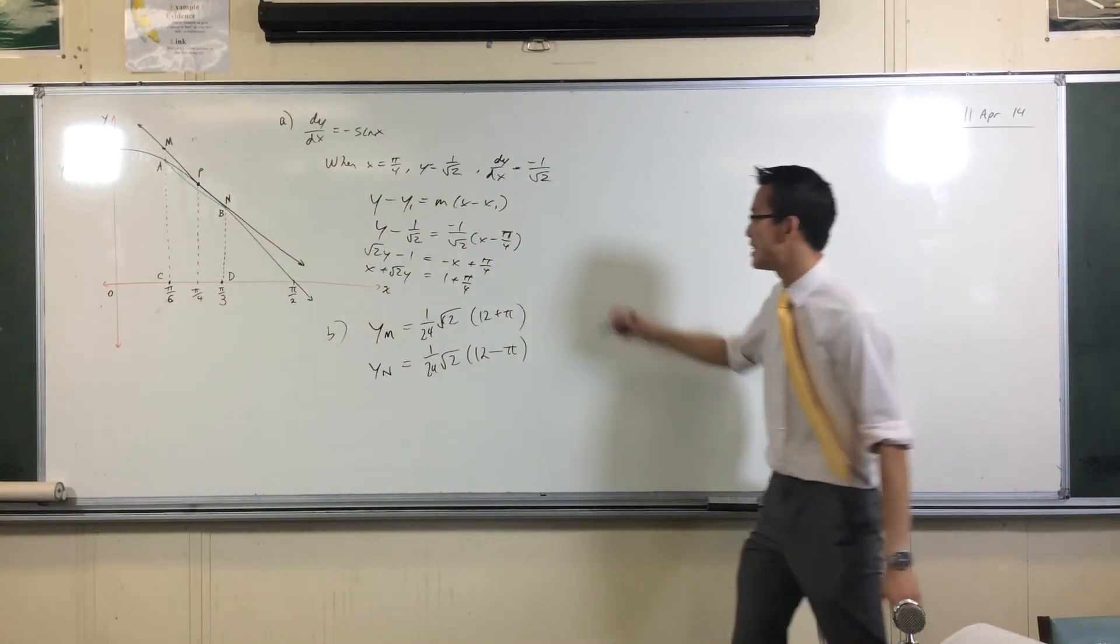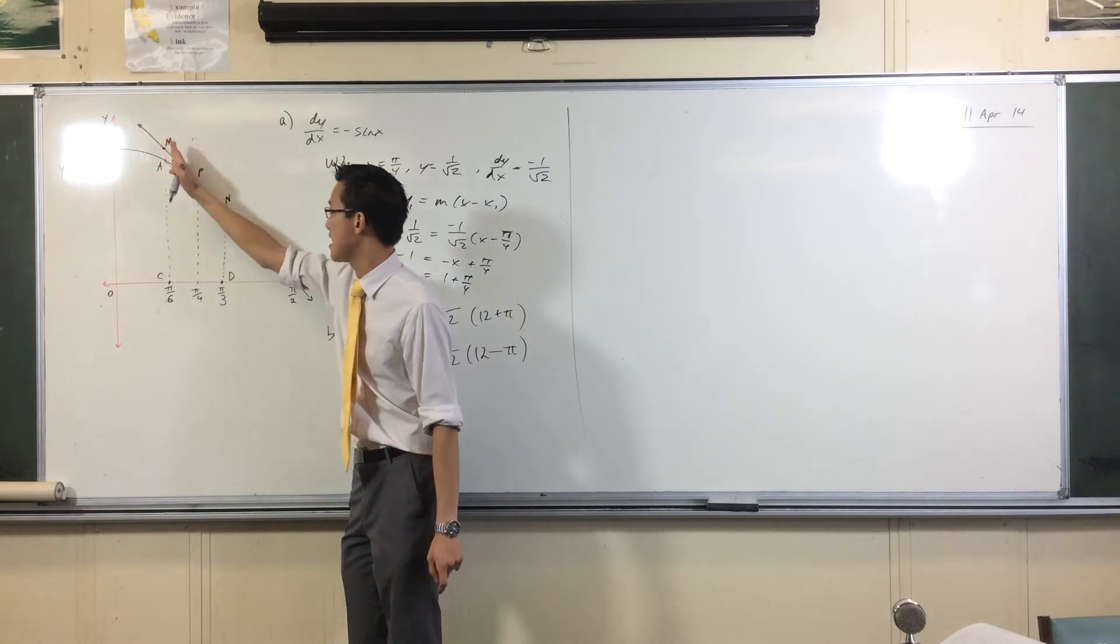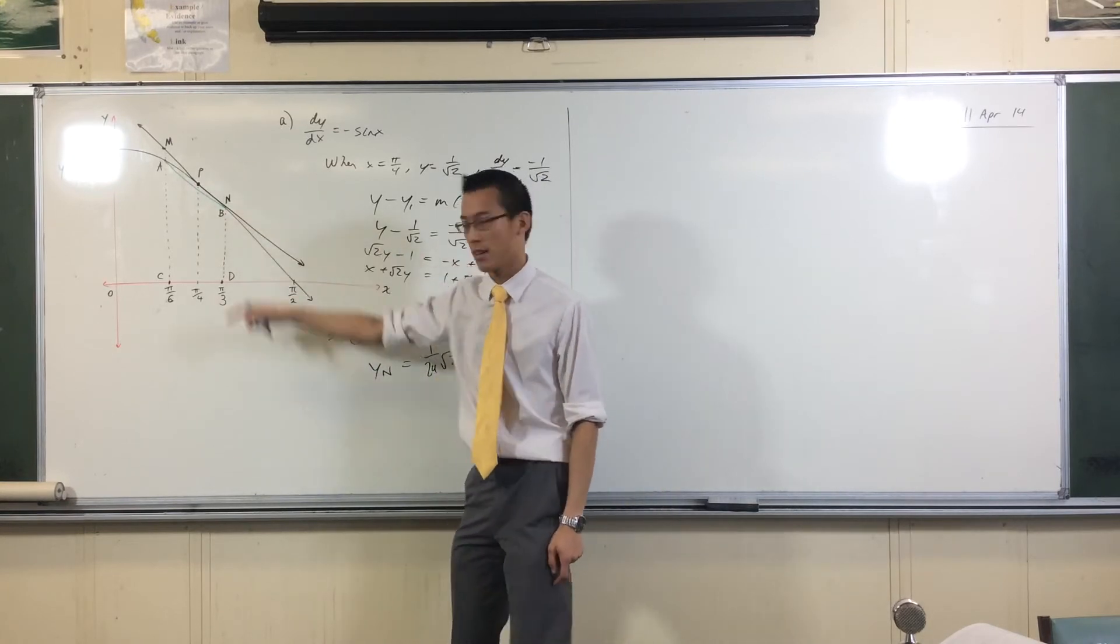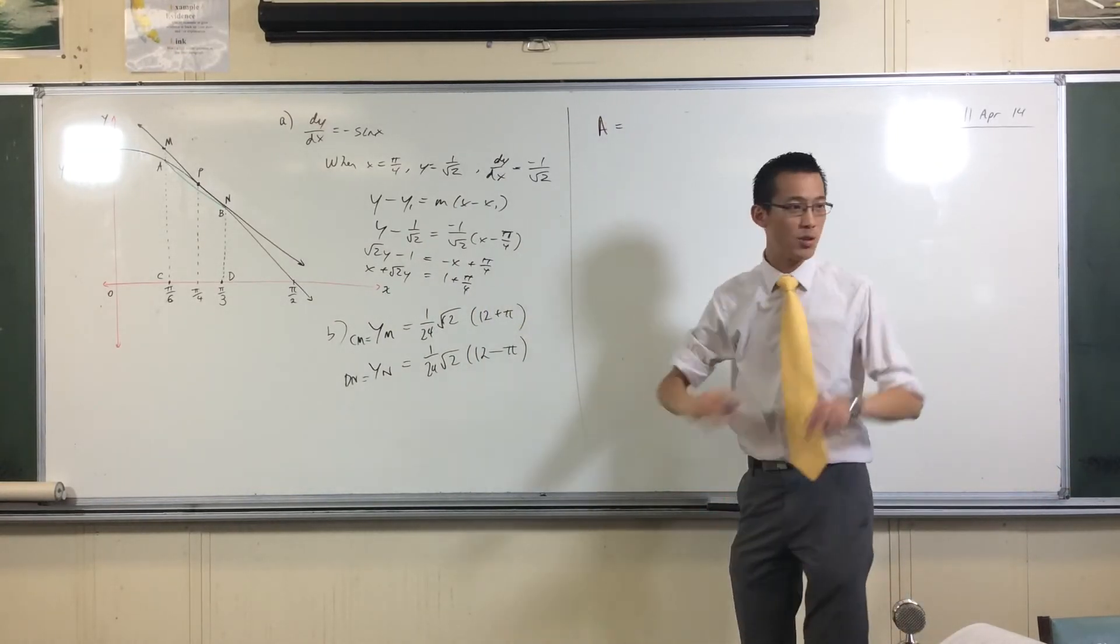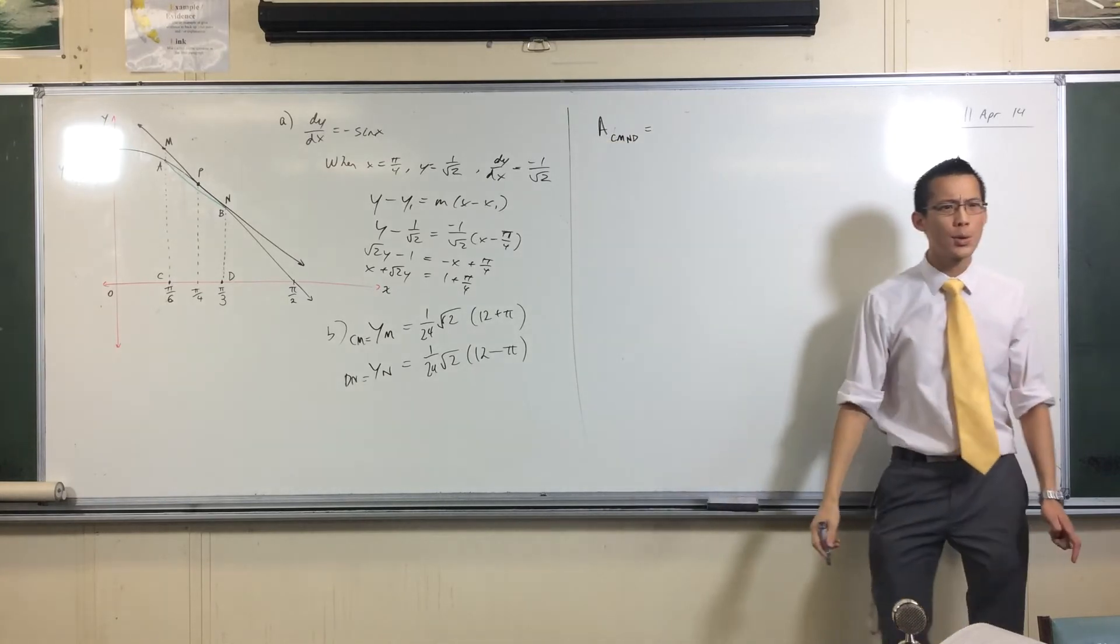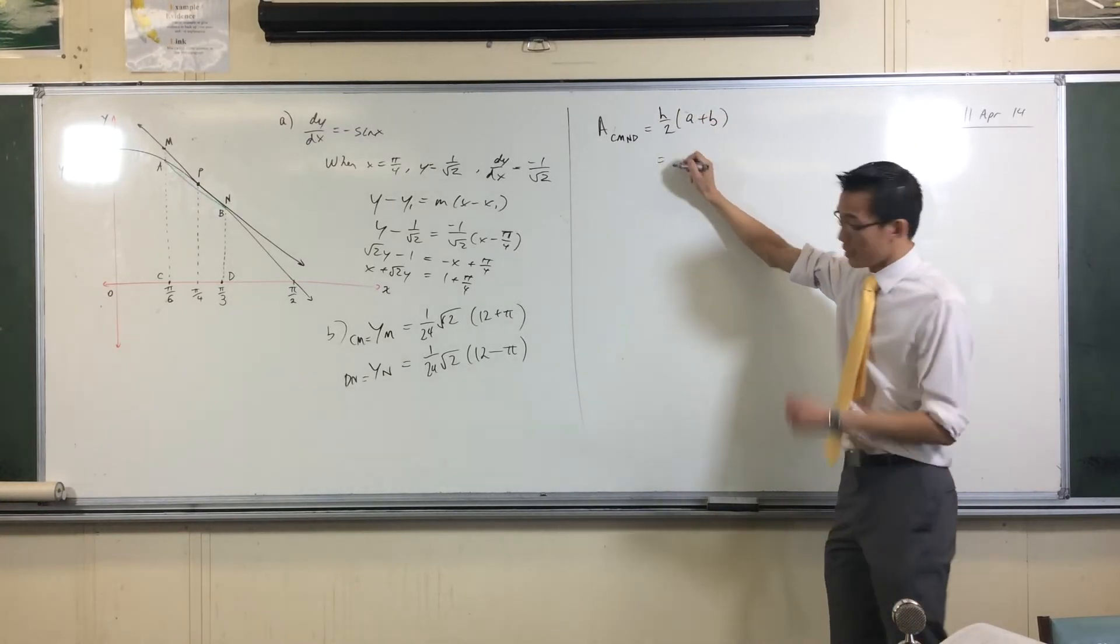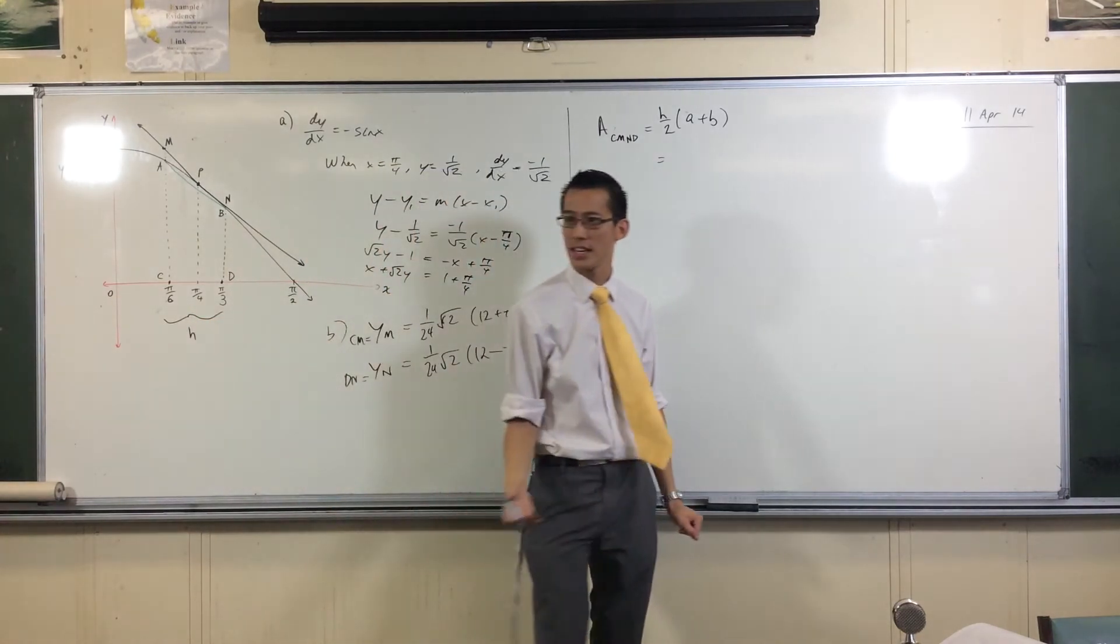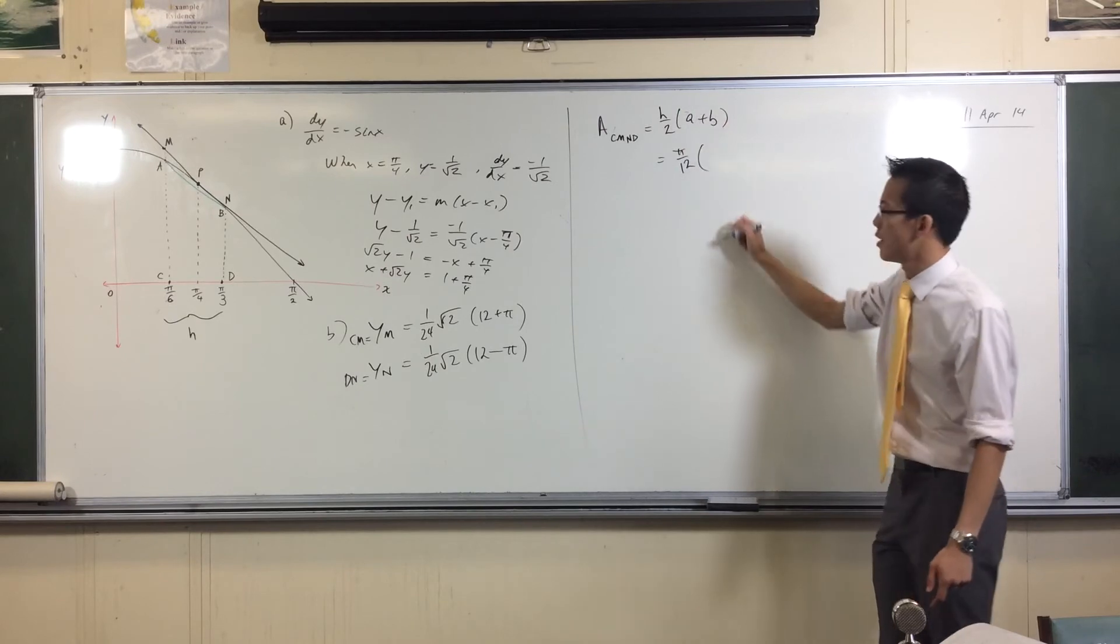So how do we work out these trapezia? You already worked out these lengths here, right? So that refers to c, m, c, m there. And this refers to d, n. So these are two parallel sides here. So if I want to work out the area of, let's do this bigger trapezium. So I should have written for you c, m, n, d. What's the formula for the area of a trapezium again? h on 2, and then the parallel sides, right? What is the height here? It's here, isn't it? That's the height. pi on 3 minus pi on 6 is pi on 6. So that's going to become pi on 12 at the front there, because I'm dividing by 2. And then you've got these two things.